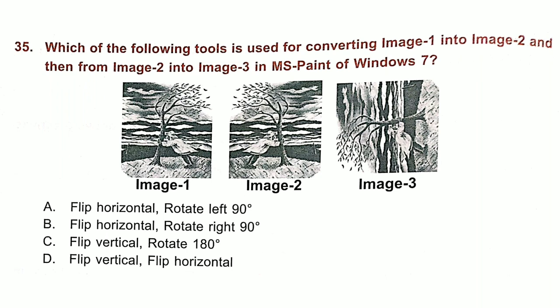Question 35. Which of the following tools is used for converting image 1 into image 2 and then from image 2 into image 3 in MS Paint of Windows 7? Answer is option A: Flip Horizontal, Rotate left 90 degrees.